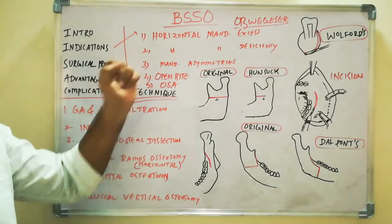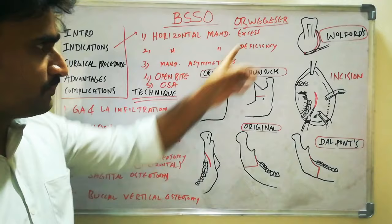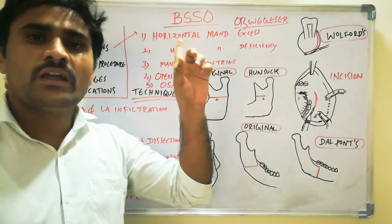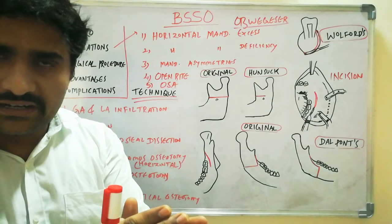In this video, we will discuss bilateral sagittal split osteotomy. This is the most widely performed orthognathic surgery on the mandible, given by Obwegeser. As the name suggests, it is bilaterally done on the mandible with sagittal splitting — one fragment contains the buccal cortical plate and another contains the lingual cortical plate.